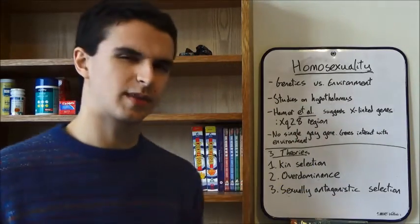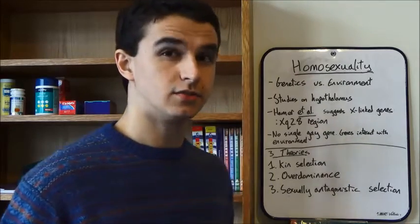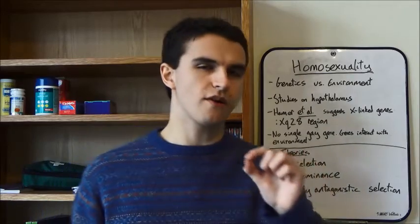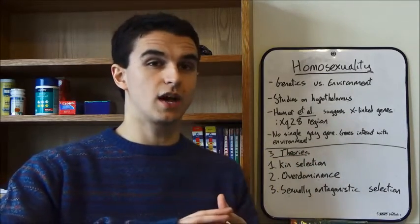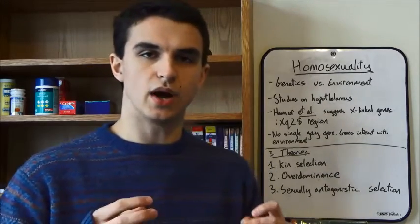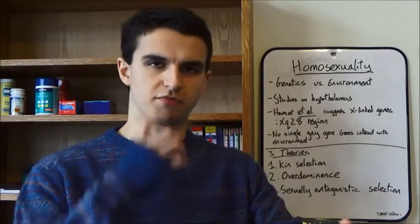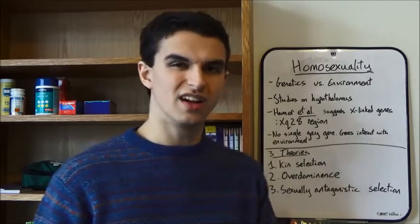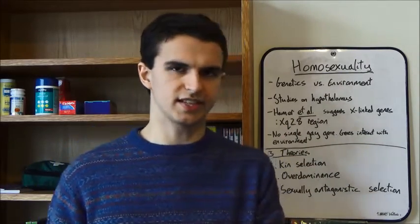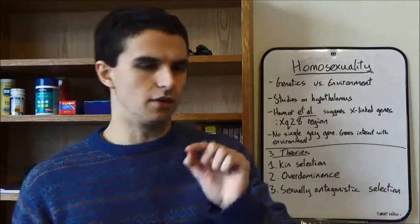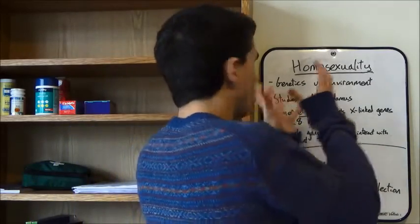The first topic we're going to be talking about today is homosexuality. Why does homosexuality exist? What's the point? Because if we think back to our first video, we talked about what fitness meant from an evolutionary biologist's perspective, and we learnt that it was the ability to reproduce and produce viable offspring. Well, homosexuals tend to not reproduce, so therefore they have low evolutionary fitness. So what's the point? We're going to be talking about that later in the video, but first we're going to be talking about what causes homosexuality.